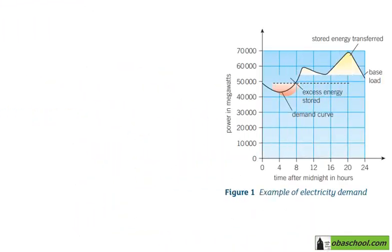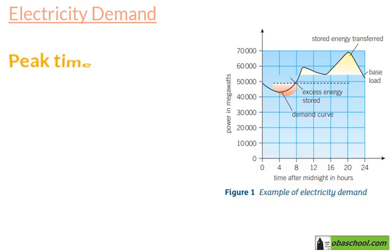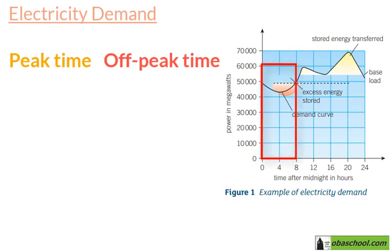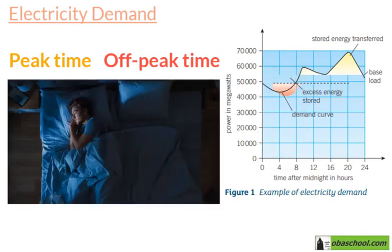This graph shows the electricity demand within a 24-hour system. As it's obvious from this graph, there are peak times and off-peak times. Starting from the beginning, there's an off-peak time between midnight and early morning, where the excess energy is stored. This is the time where most people are sleeping.